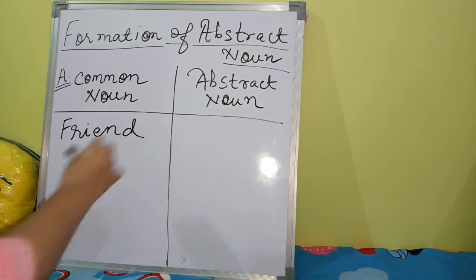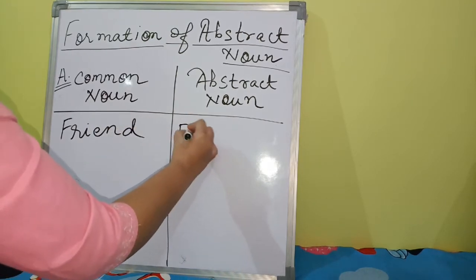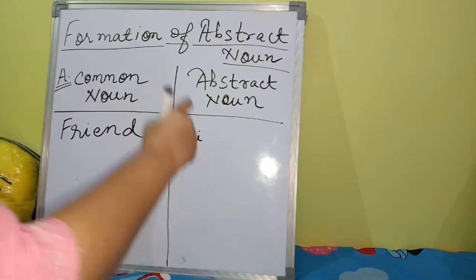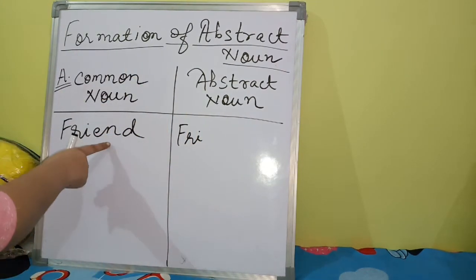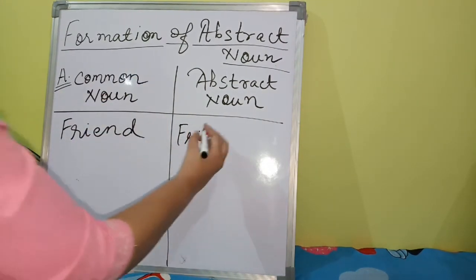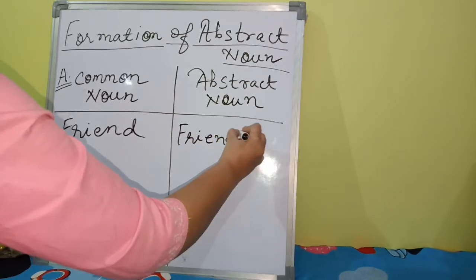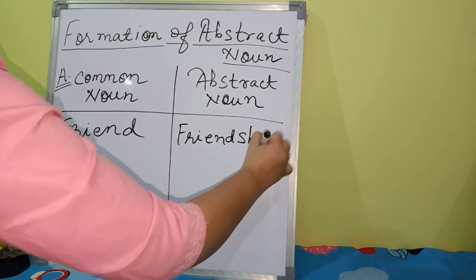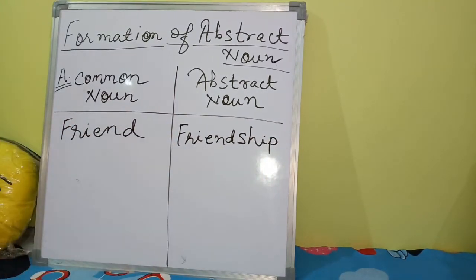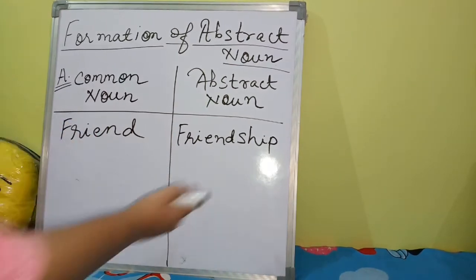From the common noun 'friend,' we form the abstract noun. The feeling of friendship — we can feel it but not see it physically. So 'friend' becomes 'friendship.' Similarly, 'relate' gives us 'relationship' — these are abstract nouns.